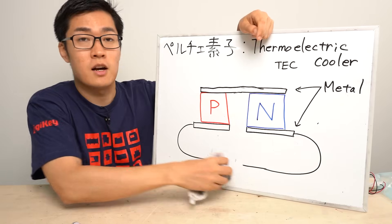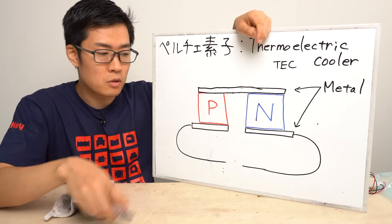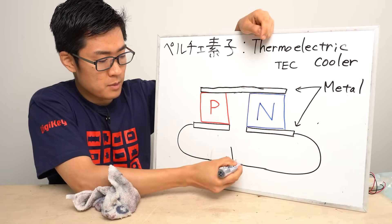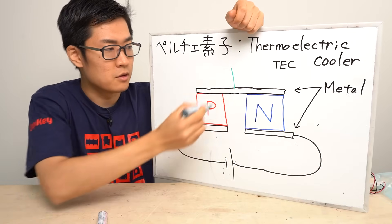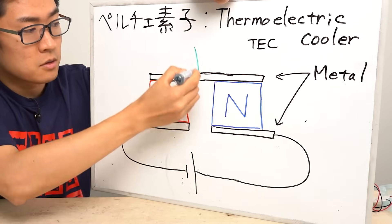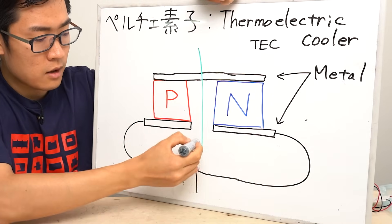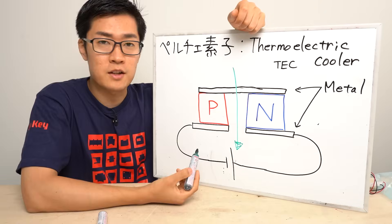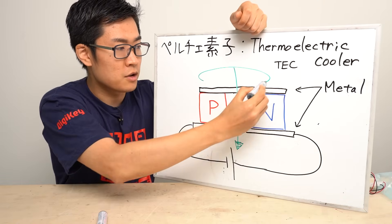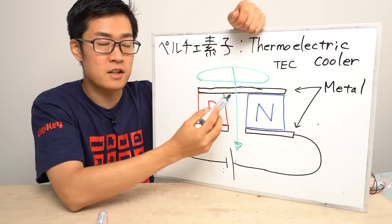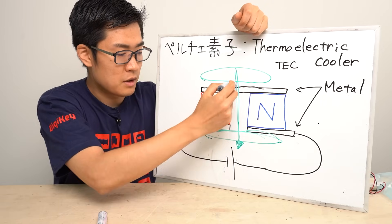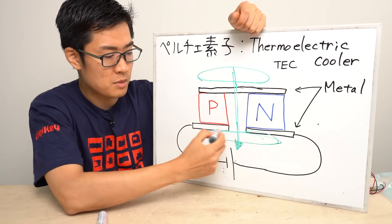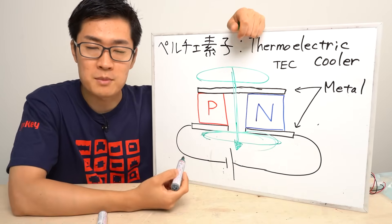When I changed the direction of the current applied to the Peltier device, the cold side became the hot side. The direction of heat transfer changed to the opposite. The top side is now absorbed of heat and cools down, and the absorbed heat transfers to the bottom side, making the bottom side hot.